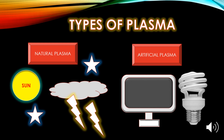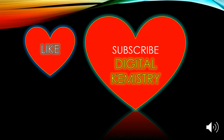Artificial plasma can be created by electrical charges on a gas. Examples of artificial plasma are fluorescent lamps, neon signs, and LED screens.